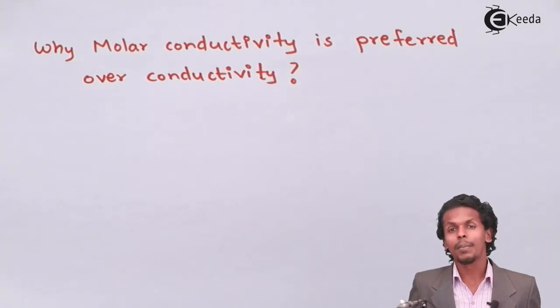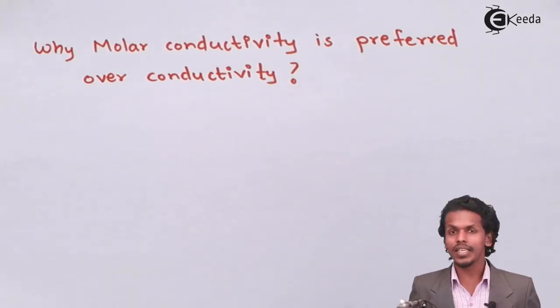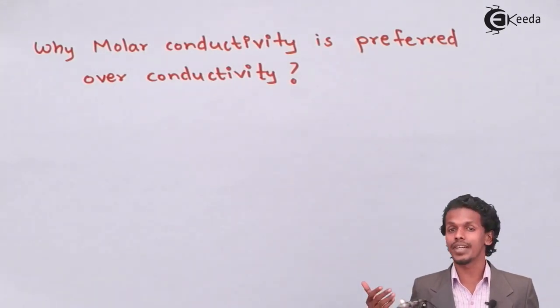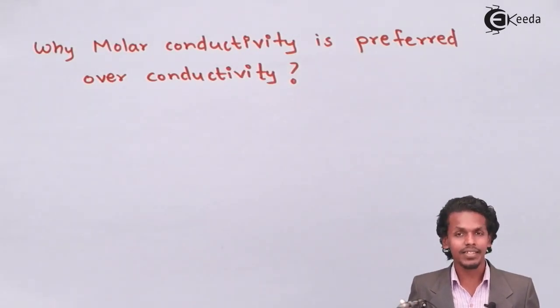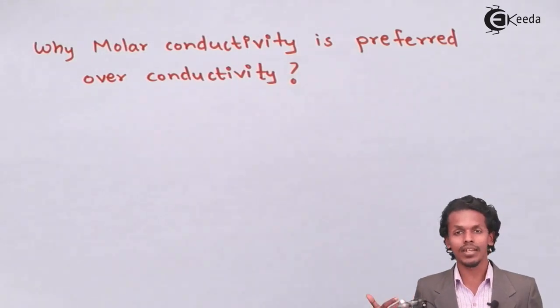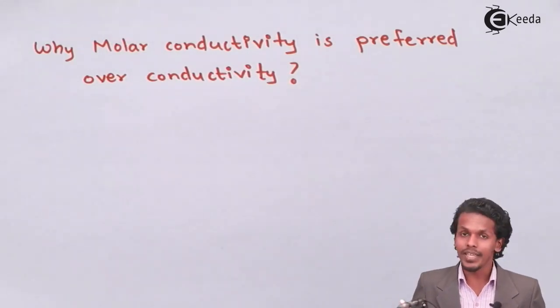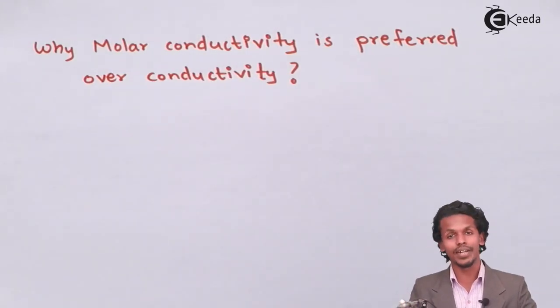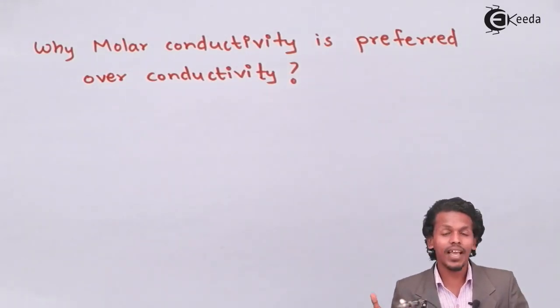When it comes to electrolytes, they can be converted into cations as well as anions. If the number of cations and anions increases, then conductivity also increases. But for different solutions, the conductivity will be different, and hence we use molar conductivity.